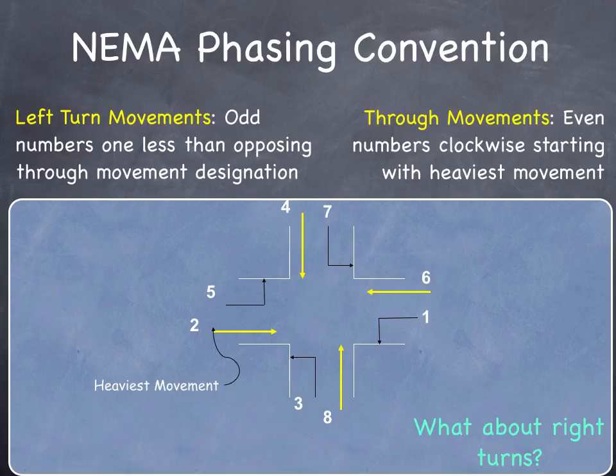There's a convention for identifying phases — the different movements are numbered. Through movements are given even numbers: two, four, six, and eight. Left turn movements are given odd numbers: one, three, five, and seven.